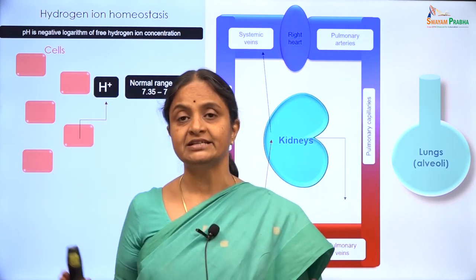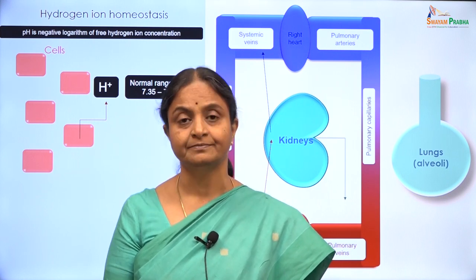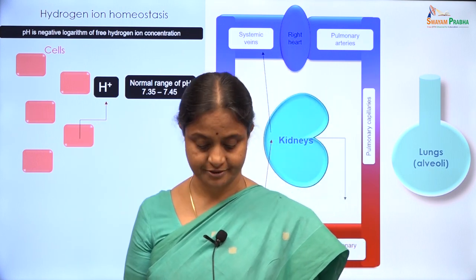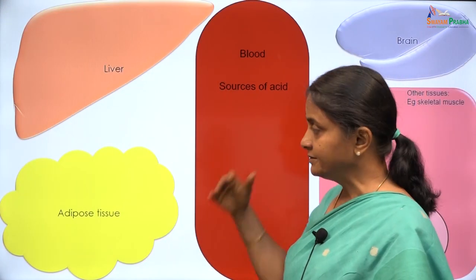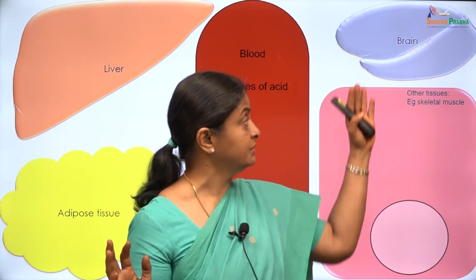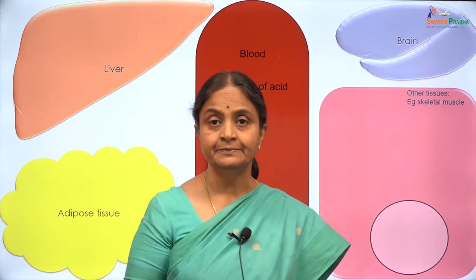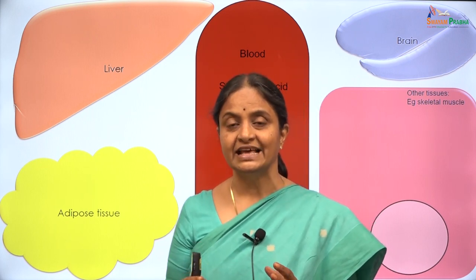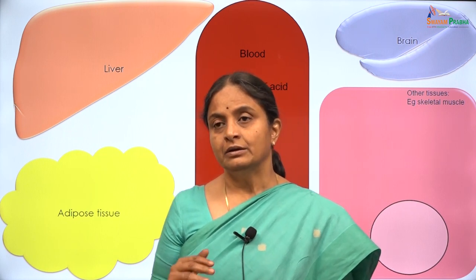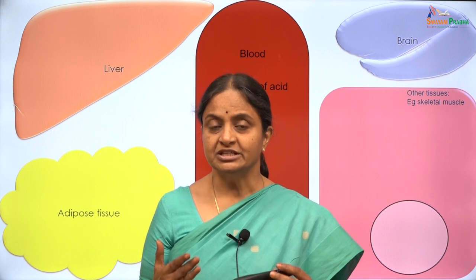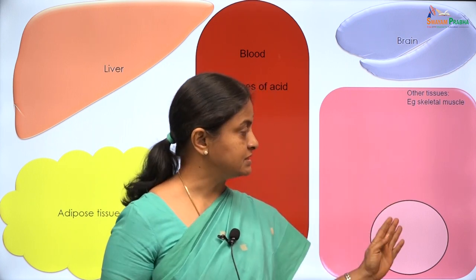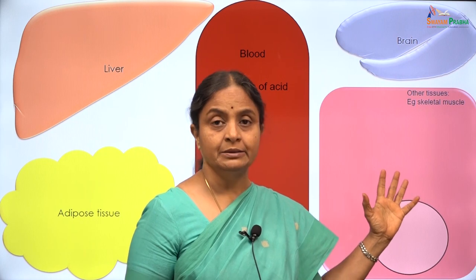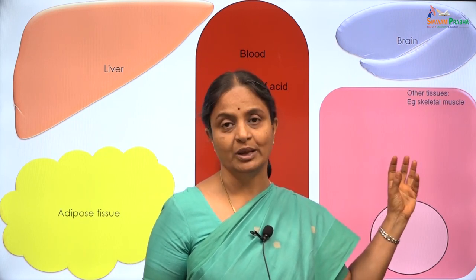This will be the organization of lectures under the topic hydrogen ion homeostasis. We will now move on to metabolic pathways resulting in acid production. Acids are produced when nutrients are broken down by cells to release energy. The major nutrient which serves as fuel for cells is glucose. Skeletal muscle and other tissues including the brain are predominantly consumers of glucose.